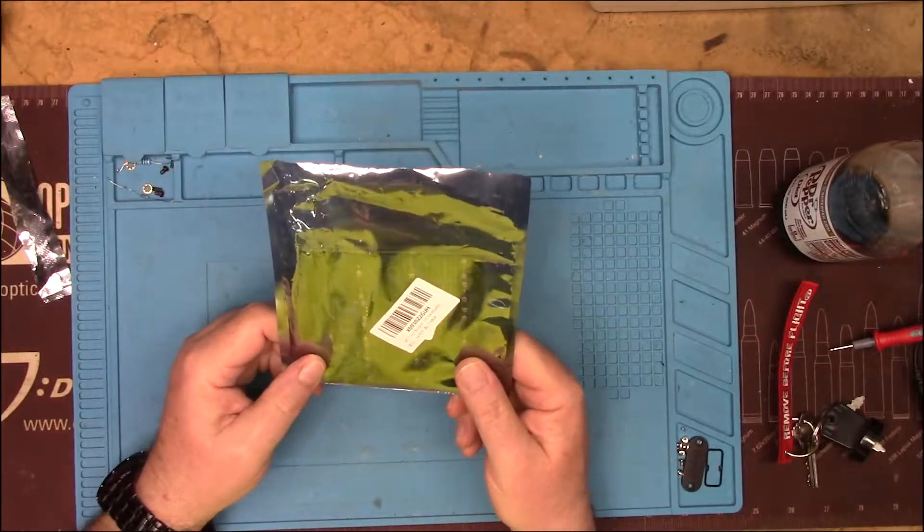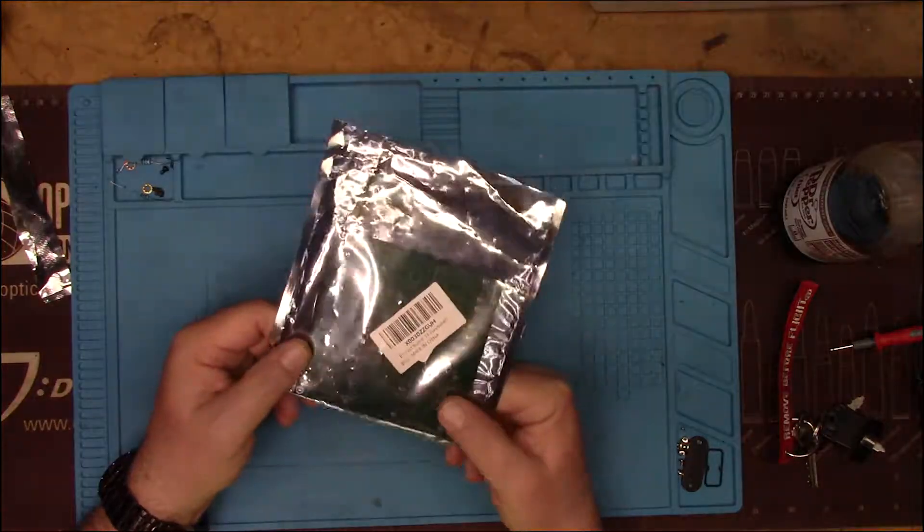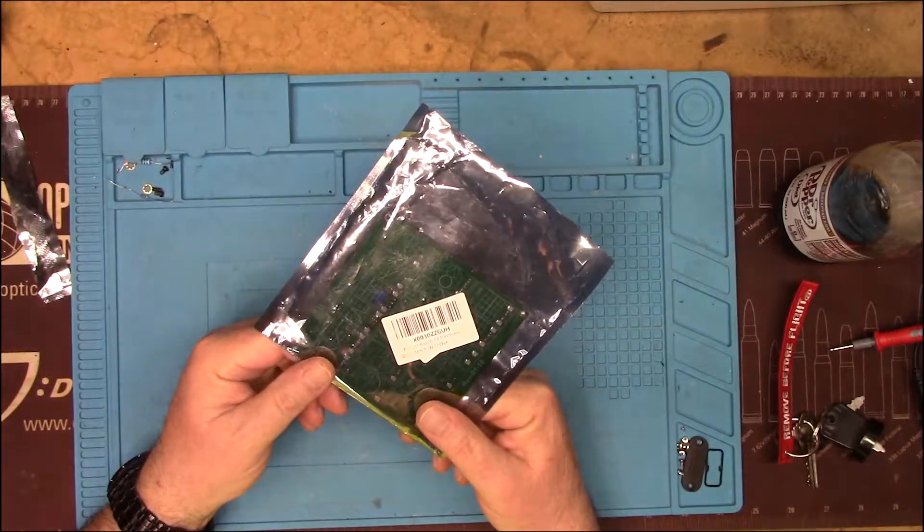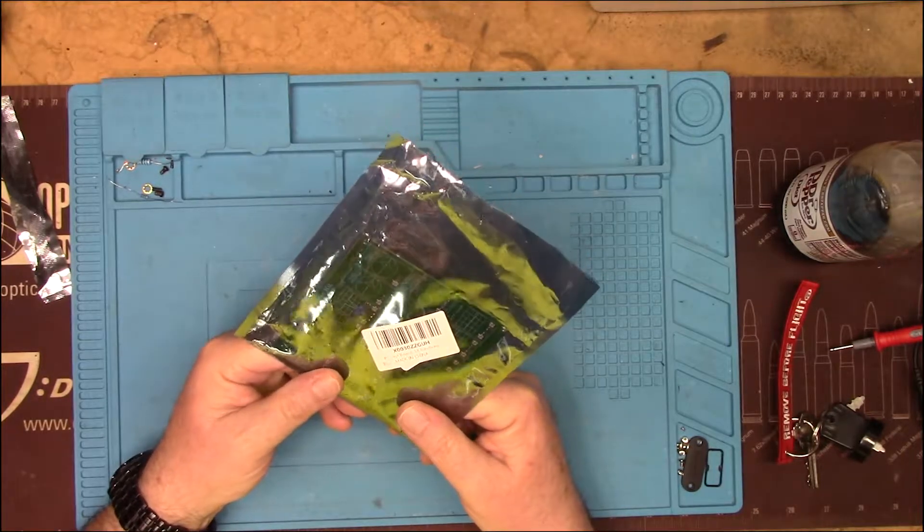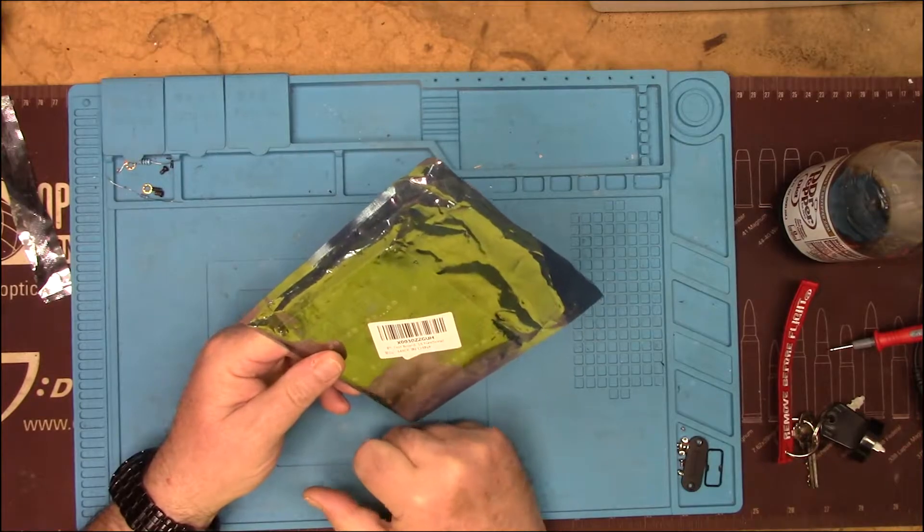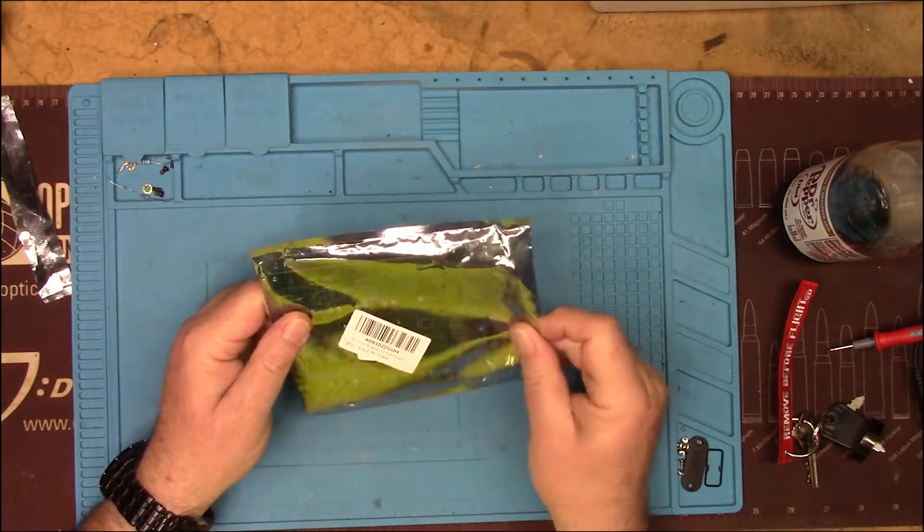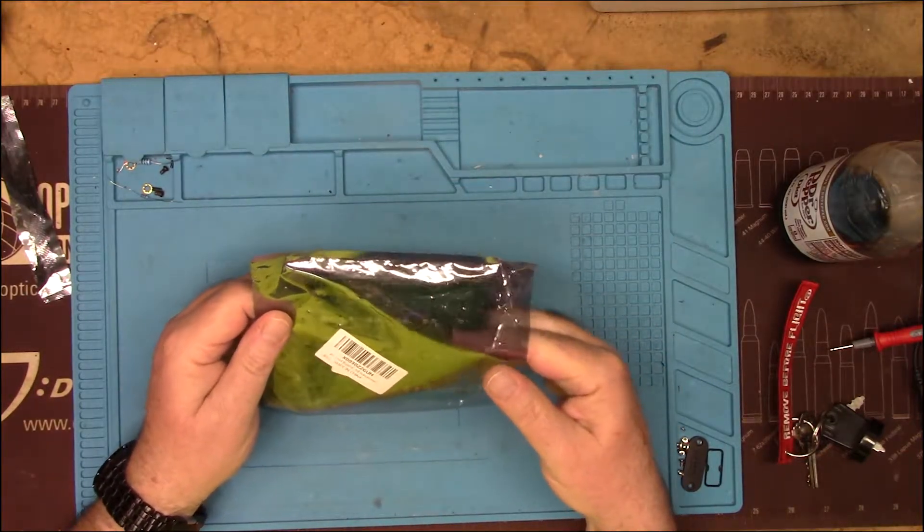So today we have this. What is this? This is an X0030ZZ GUH. That's what this is. This is an RF test board, 18 tests in one board.